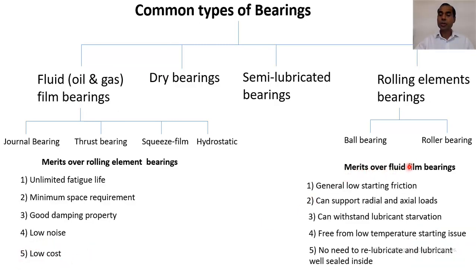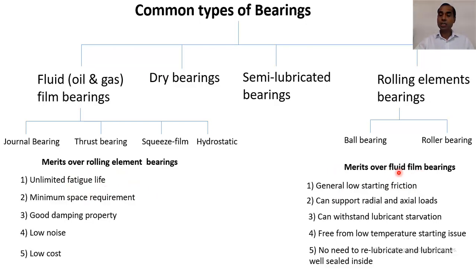Now considering the advantages of rolling element bearings over fluid film bearings: generally low starting friction is a very big advantage, because in many machines the starting friction can be very high. That is the case with fluid film bearings, but rolling element bearings provide very low starting friction and can support both radial and axial loads.